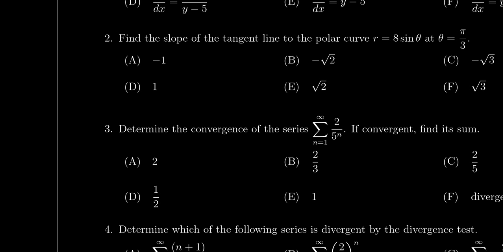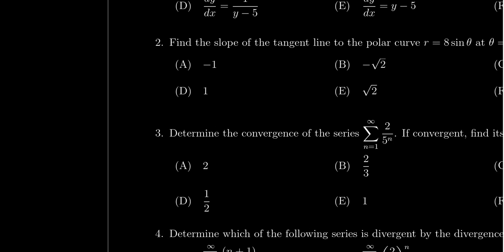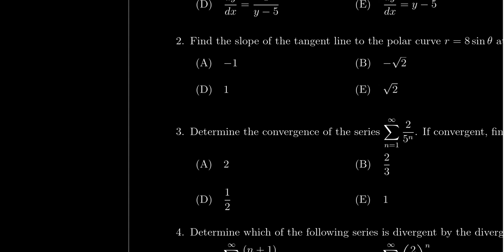So if we want to find the tangent line, I'm going to go a little bit to the side here so we get a little more space to write out here. If we're looking for the slope of the tangent line, we're trying to find the derivative dy over dx, which if you treat a polar curve as a parametric function, we have to take the derivative of y with respect to theta and divide that by the derivative of x with respect to theta.